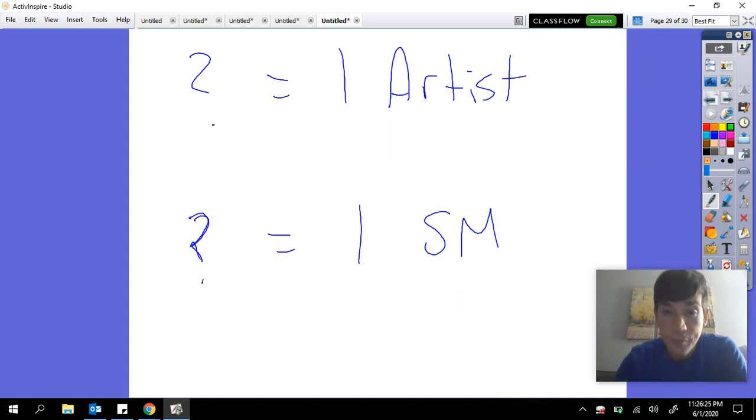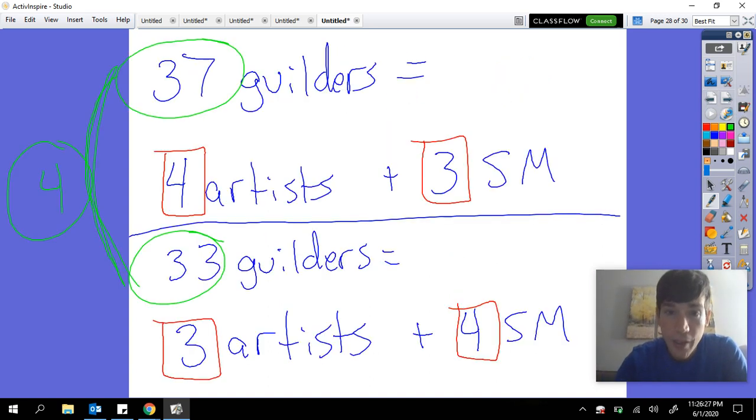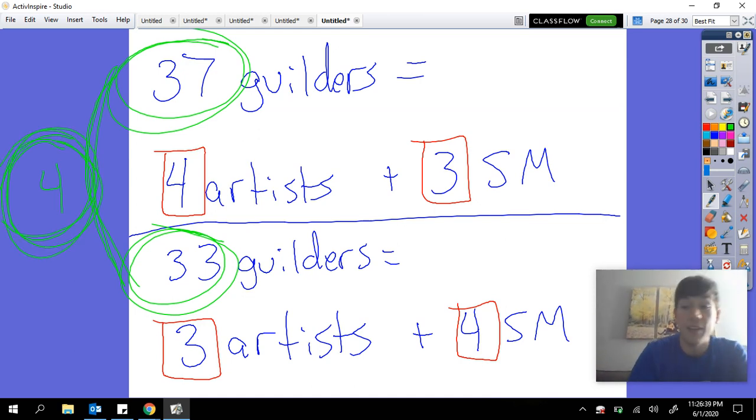Now I want to remind you that we said, just based upon 37 and 33, we know that an artist costs more than a stonemason, and specifically that an artist costs 4 more than a stonemason. That should give you somewhere really good to start.